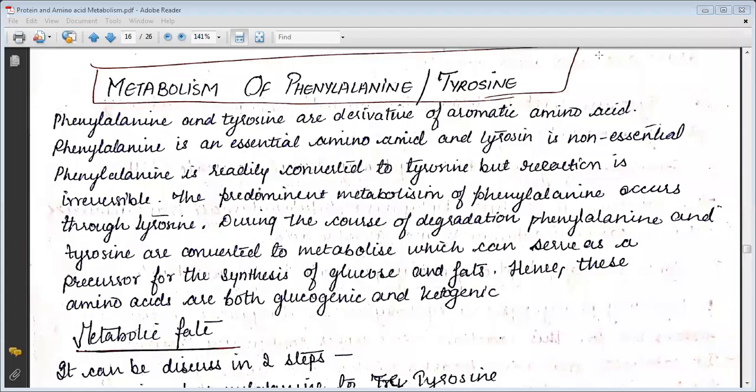Hello, I am going to be learning about the metabolism of phenylalanine and tyrosine. Phenylalanine and tyrosine are derivatives of aromatic amino acids. Phenylalanine is an essential amino acid and tyrosine is non-essential.